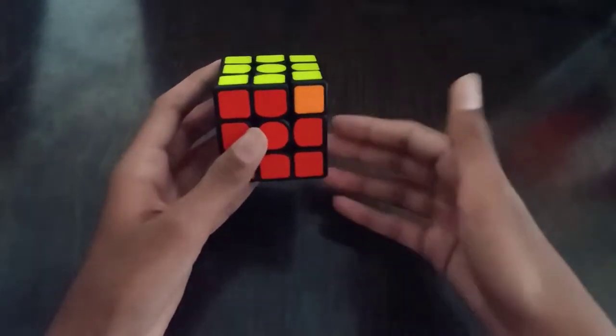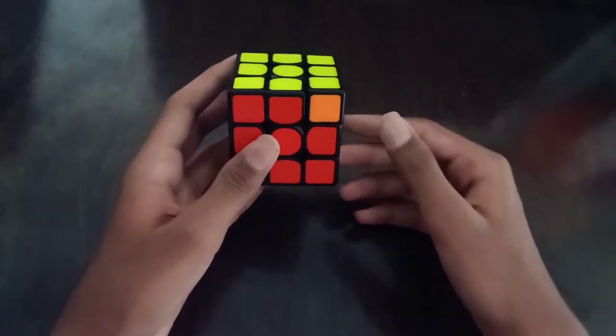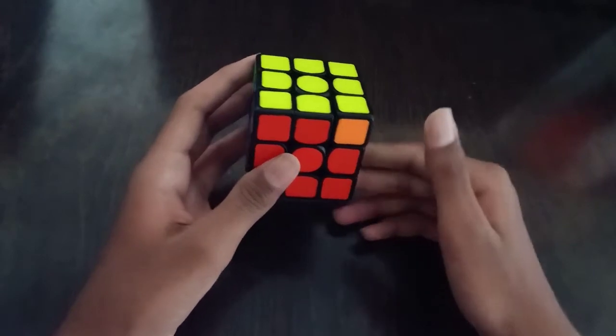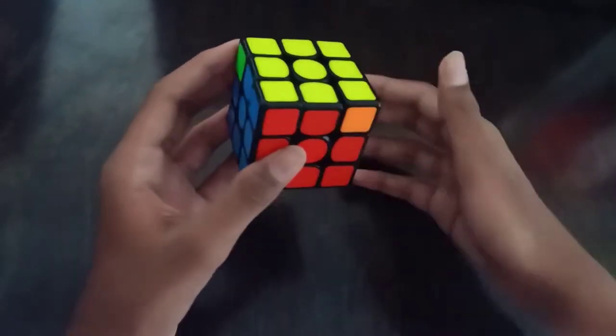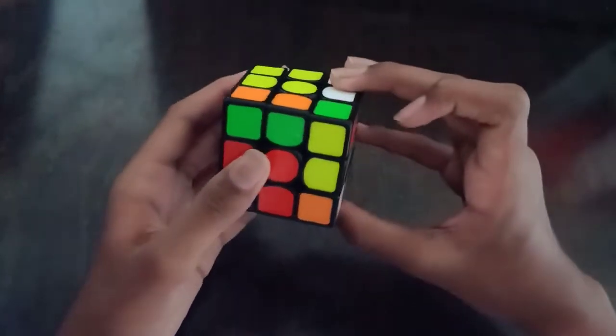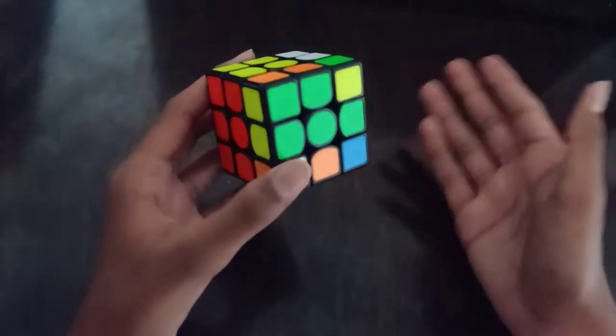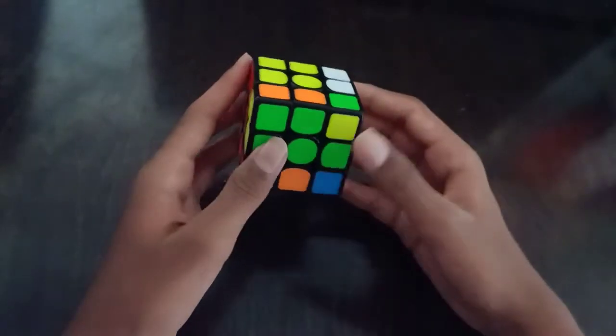have to do some set of R and U moves. If you know the back U perm, the anti-clockwise one, the first four steps are the same. Then rotate to the right side of your cube and